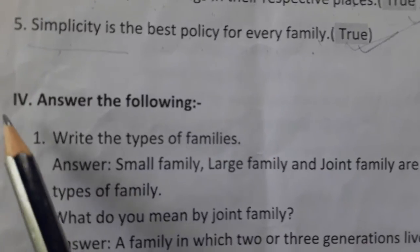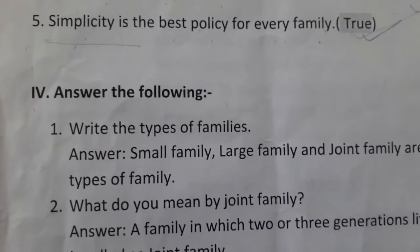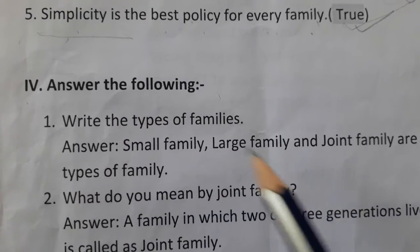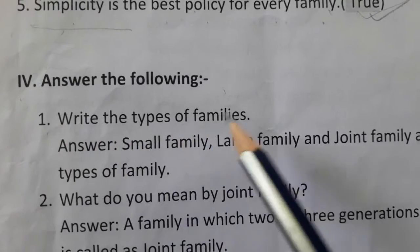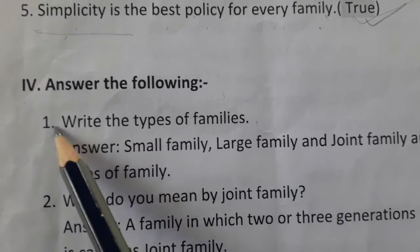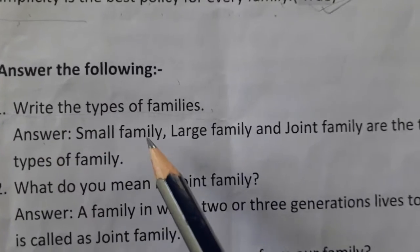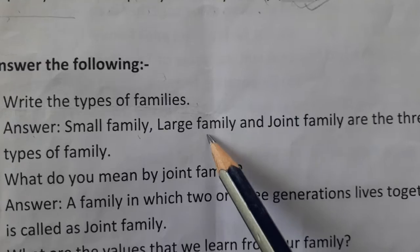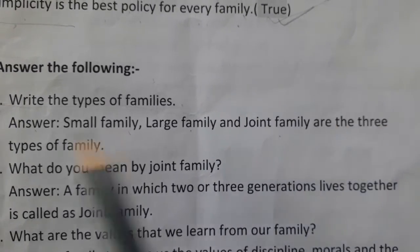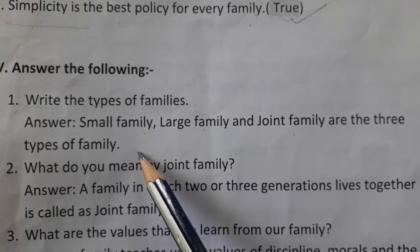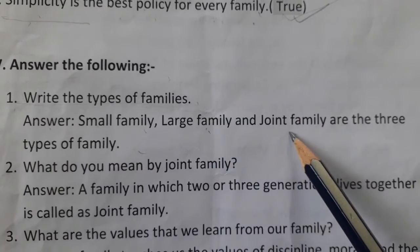Next, we are going to see Roman numeral 4, answer the following — question and answer. You have to write short answers for the questions. First one: write the types of families. The answer is: small family, large family, and joint family are the three types of families.